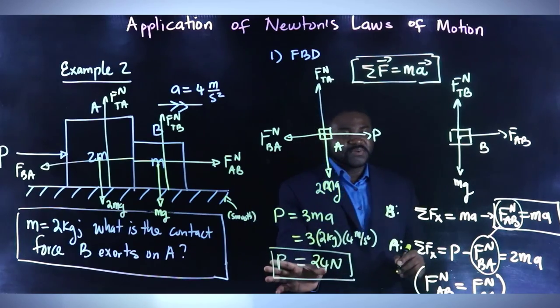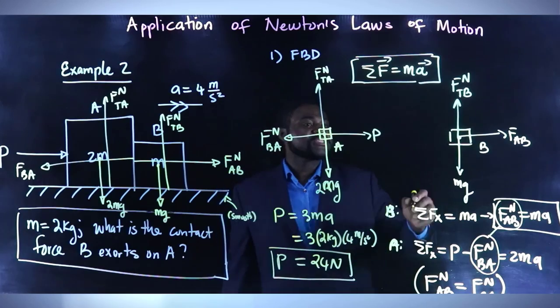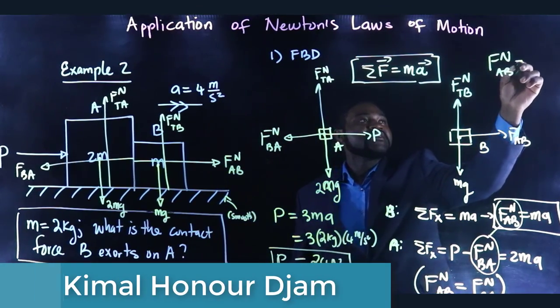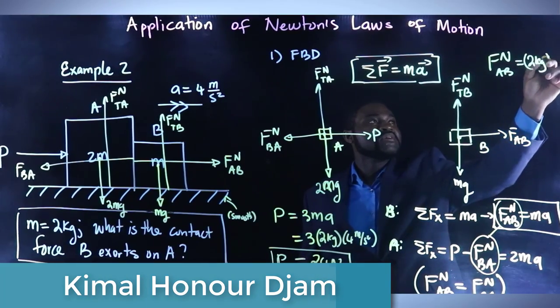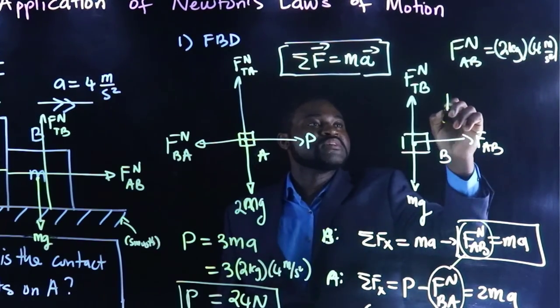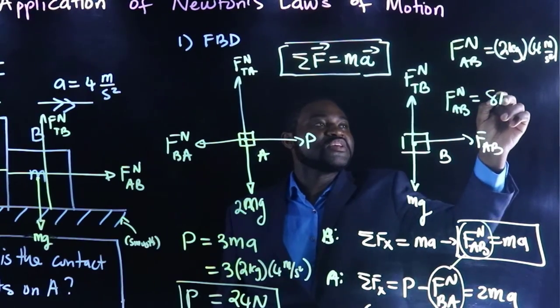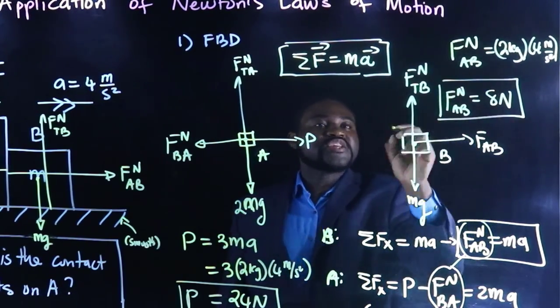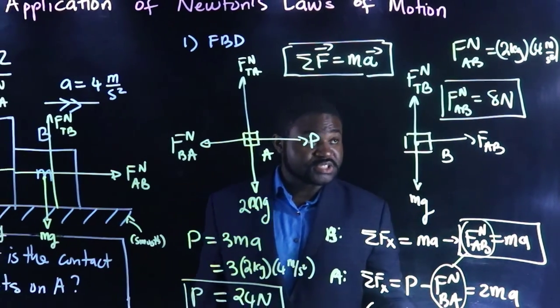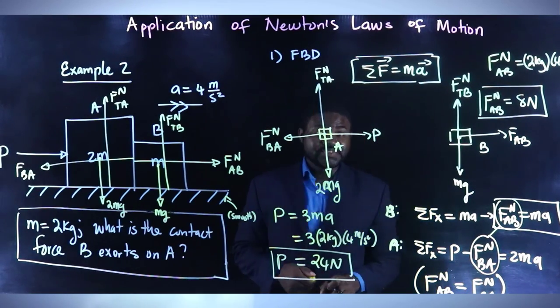But, we have been asked to calculate FAB, which will just be FN AB is just 2 kilograms multiplied by 4 meters per square seconds. So, FN AB is equal to 8 newtons. This 8 newtons is equal to the force that B asserts on A because this is the consequence of Newton's third law of motion.